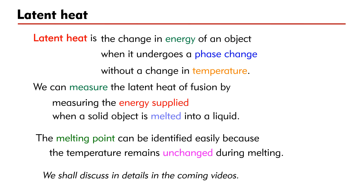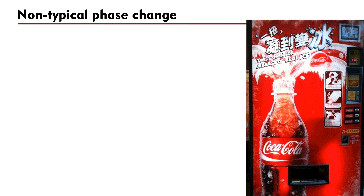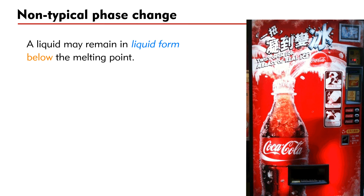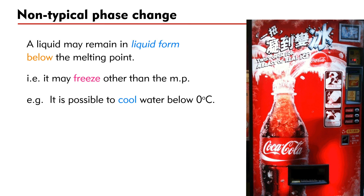We shall discuss this experiment in more detail in the coming videos. However, the world is not so simple. In some cases a liquid may remain in liquid form below the melting point — that is, it may freeze at a temperature other than the melting point. For example, it is possible to cool water below 0 degrees Celsius.